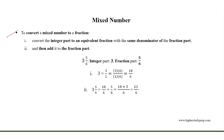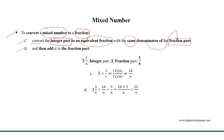In order to convert a mixed number to a fraction, we need to first convert the integer part to an equivalent fraction with the same denominator as the fraction part, and then add the equivalent fraction to the fraction part of the mixed number. For example, 3 and 5 over 6 is a mixed number, where the integer part is 3 and the fraction part is 5 over 6.